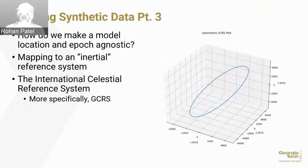The next question is making a model location and epoch agnostic, which is a fancy way of saying we want to make a model that I can evaluate using data collected in Atlanta, Guam, Chile, or even on a space-based telescope. It has to be independent of where the sensor is and independent of the time that the image was taken. What we do is we map to an inertial reference system. The best we have is the International Celestial Reference System, which is a reference system centered at the very center of mass of our solar system, and the directions are defined by extragalactic objects. For timescales we are concerned with it is essentially inertial.